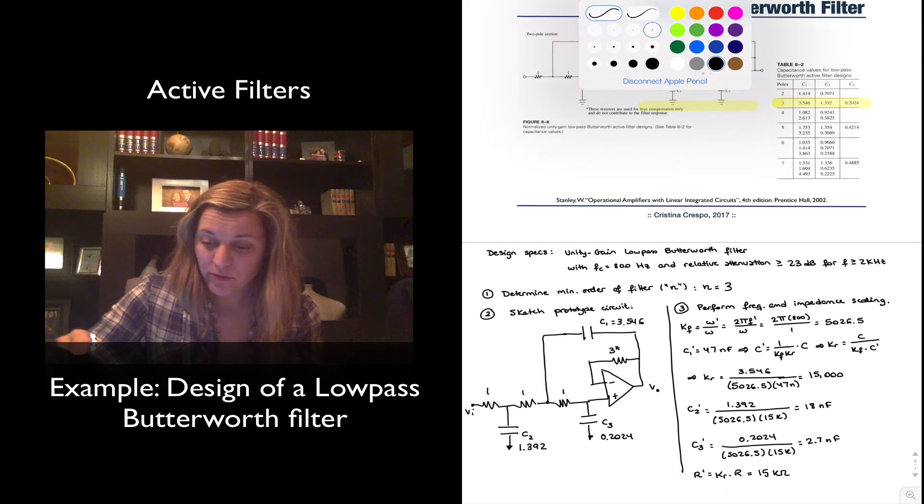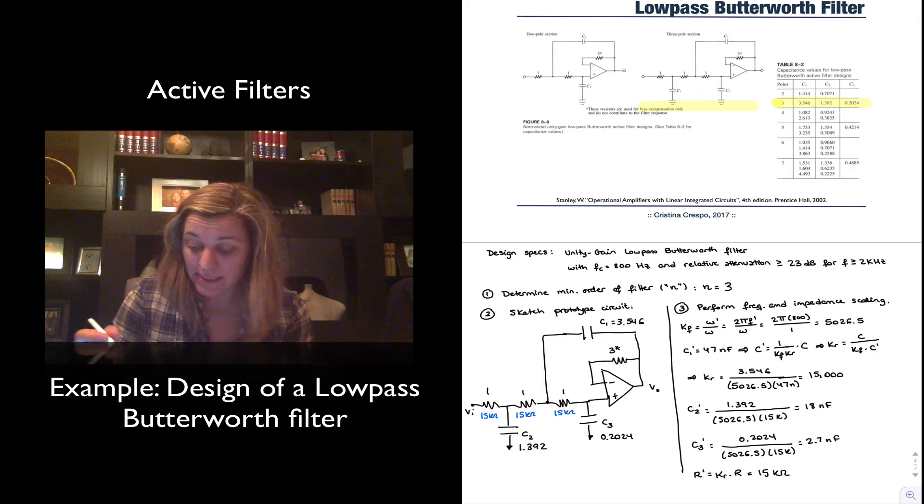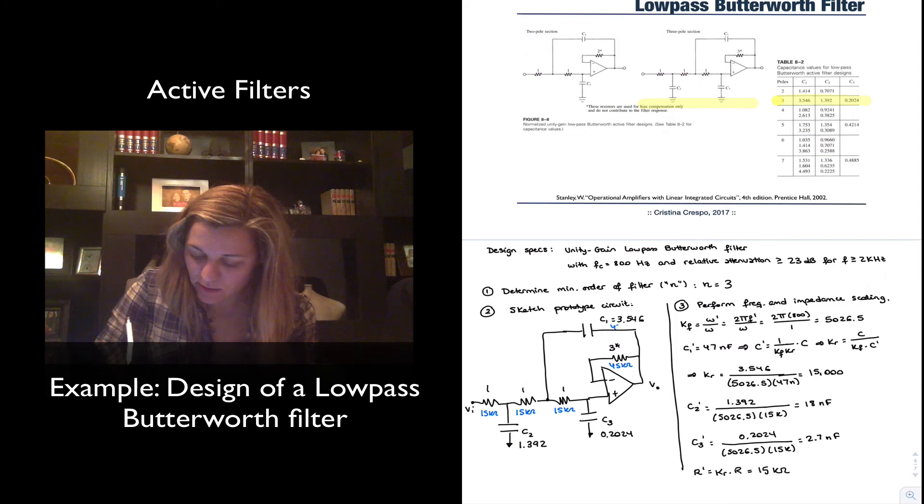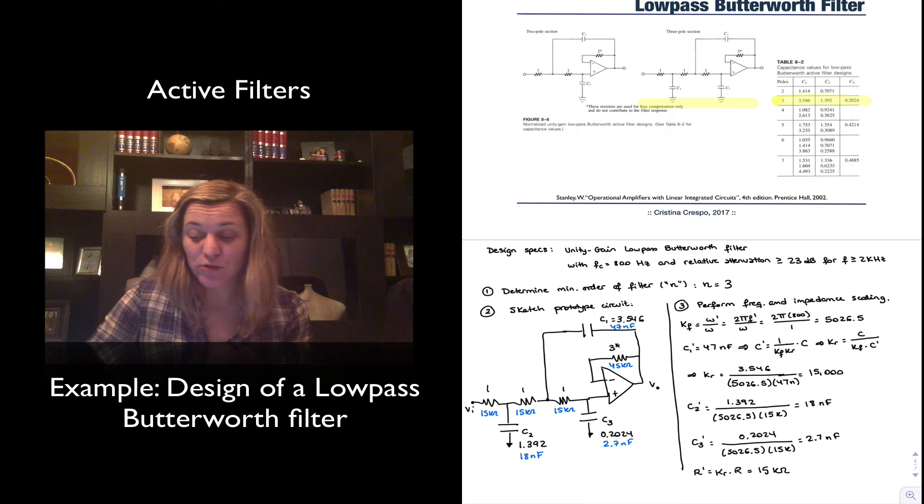So that's it. My final design then, if I were to replace the values already directly on the circuit, is that all of these resistors will be 15K ohms, except for this that is marked as a 3 asterisk, which will be 3 times that, or 45K ohms. And again, that doesn't affect the frequency response of the circuit; that is used there as a compensation resistor for DC offsets. C1 is going to be equal to, we decided, 47 nF. C2 was 18 nF and C3 was 2.7 nF. And so the circuit with the components labeled in blue will be the final circuit with the frequency response as specified in the spec: a cutoff of 800 Hz and relative attenuation greater than 23 dB at a frequency of 2 kHz. So this is our design of a Butterworth filter.